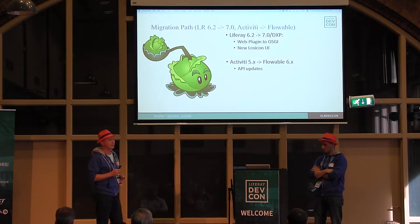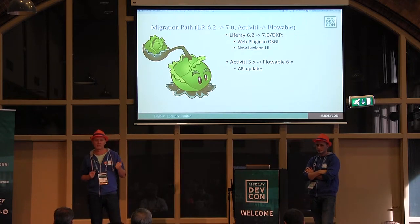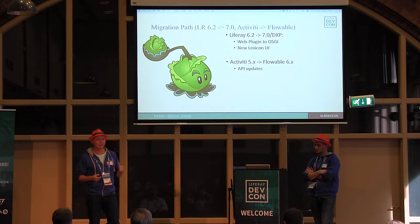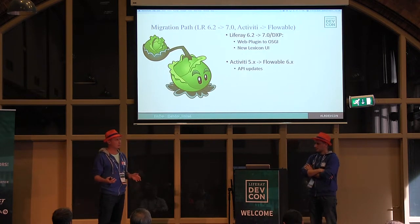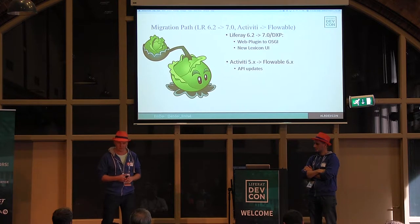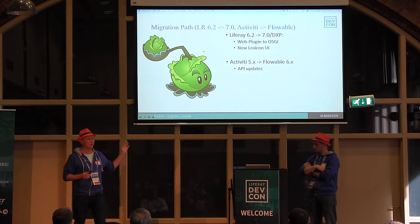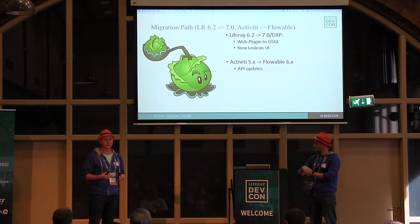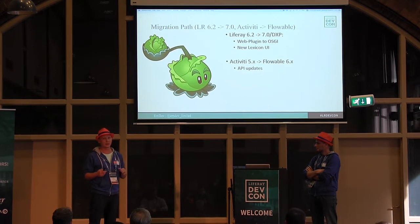Another migration path was related to the fact that the core team of Activiti moved out from Alfresco - the company that sponsors Activiti - and organized a new project called Flowable. So the next version of the BPMN engine we are using in our work is called Flowable 6. We also had to migrate all our integrations from Activiti to Flowable. For those who don't know: Activiti and Flowable are workflow engines based on BPMN. They are Java, open source, widely used - and they allow you to implement really complex business processes and execute them.